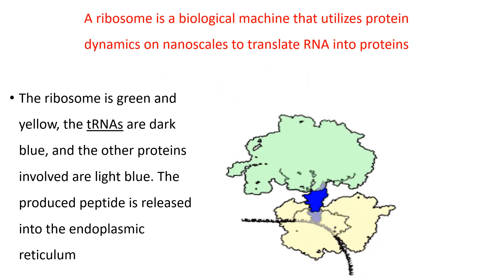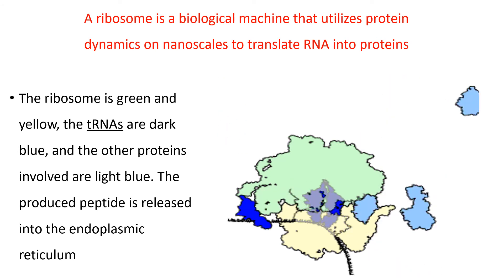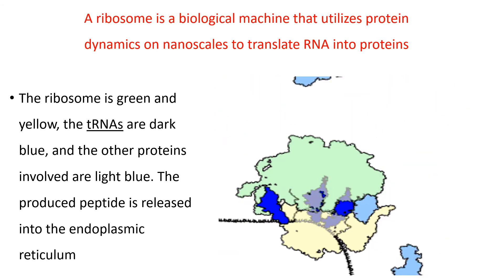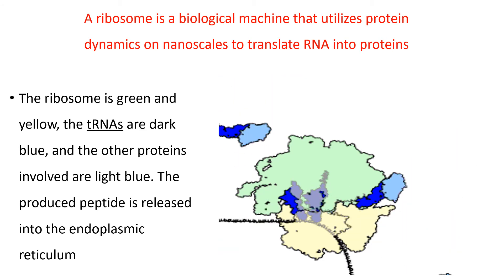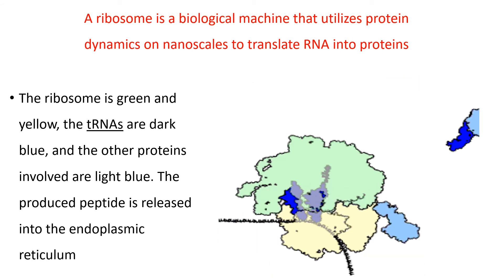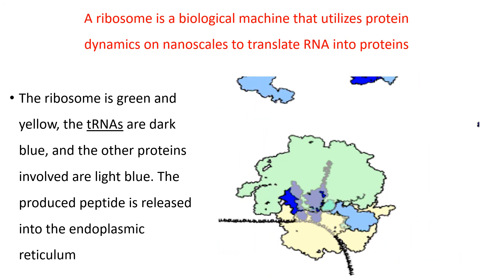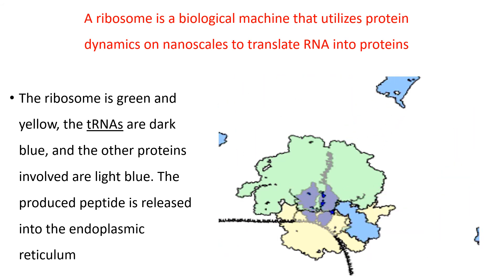A ribosome is a biological machine that utilizes protein dynamics on nanoscales to translate RNA into proteins. In this figure, a ribosome is shown in green and yellow, the tRNAs are dark blue, and other proteins involved are light blue. The produced peptide is released into the endoplasmic reticulum.